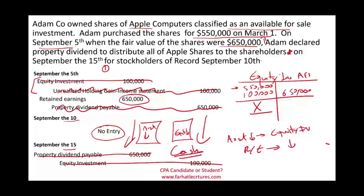This is just like a cash dividend where we reduce assets and reduce equity. I keep emphasizing this point because when we look at stock dividends, we'll see that stock dividends do not reduce equity — there is no effect on assets and no effect on total equity. So the key distinction is: cash dividends and property dividends reduce both assets and equity, whereas stock dividends do not.